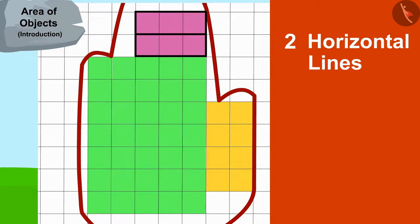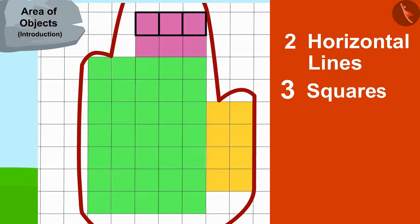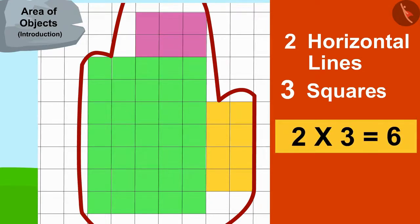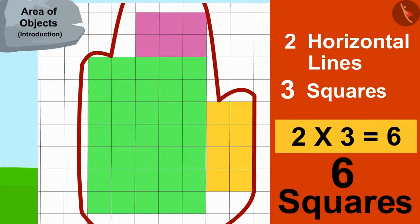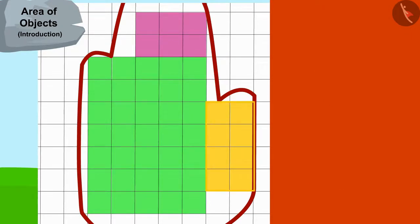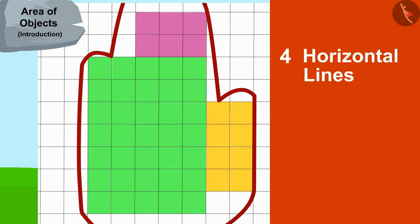That means this rectangle has two times three, or six squares. And this third rectangle has four horizontal lines and every line has two squares. It means there are four times two, or eight squares in this rectangle.